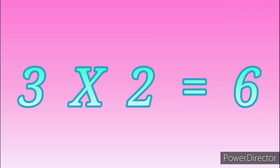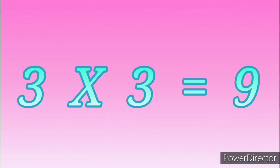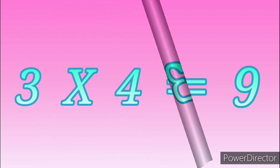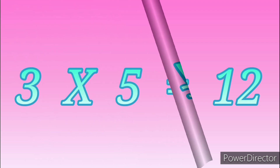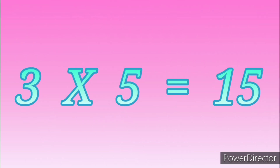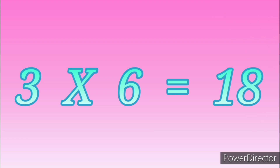3 threes are 9, 3 fours are 12, 3 fives are 15, 3 sixes are 18.